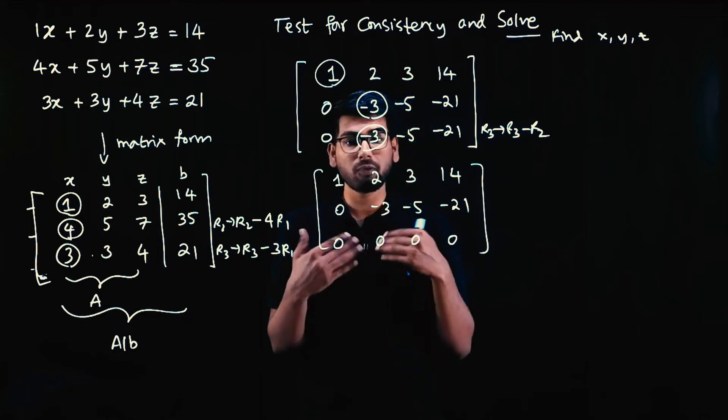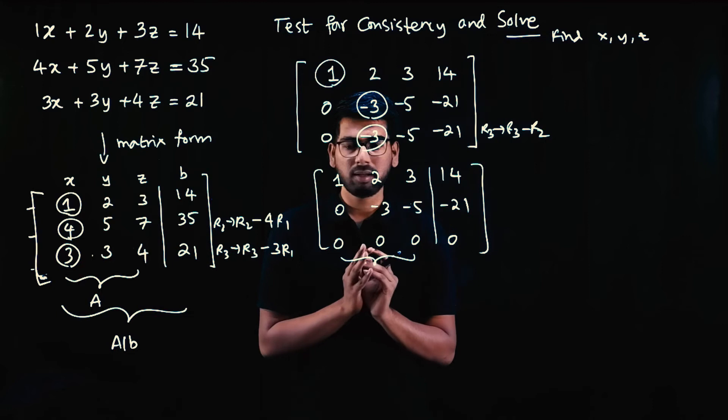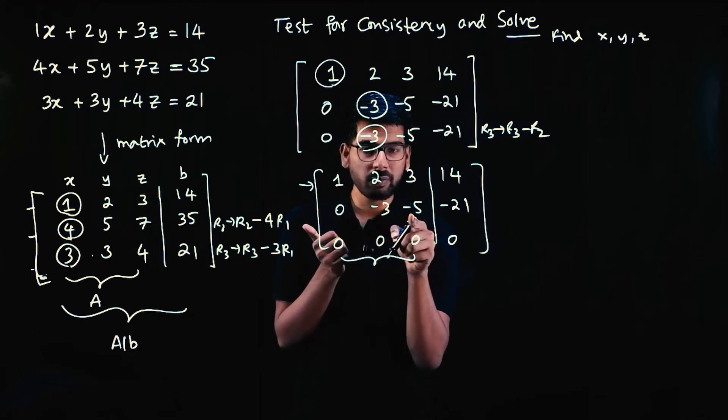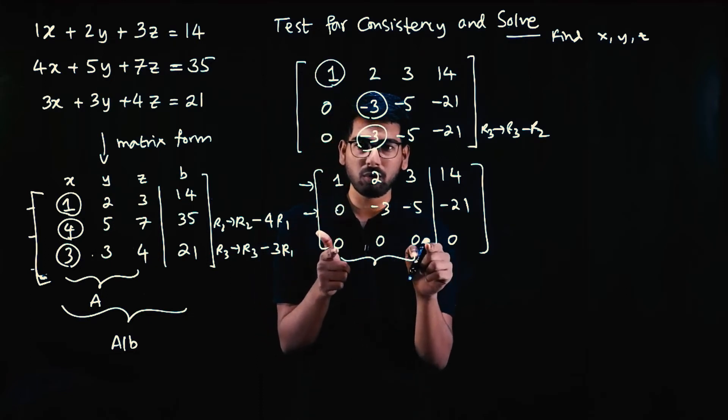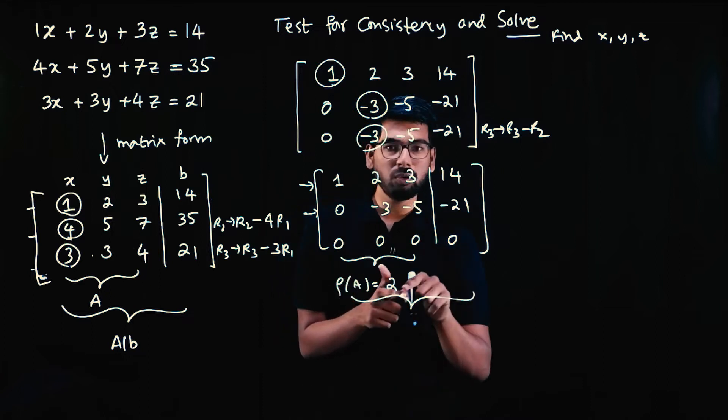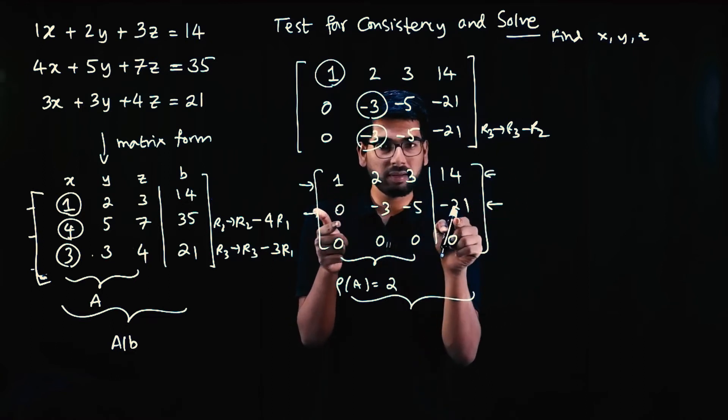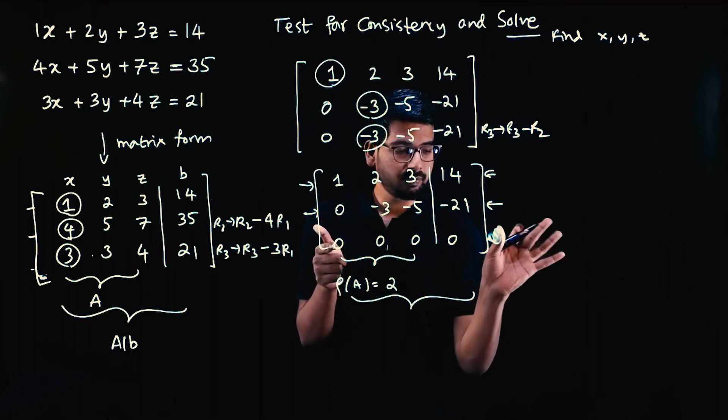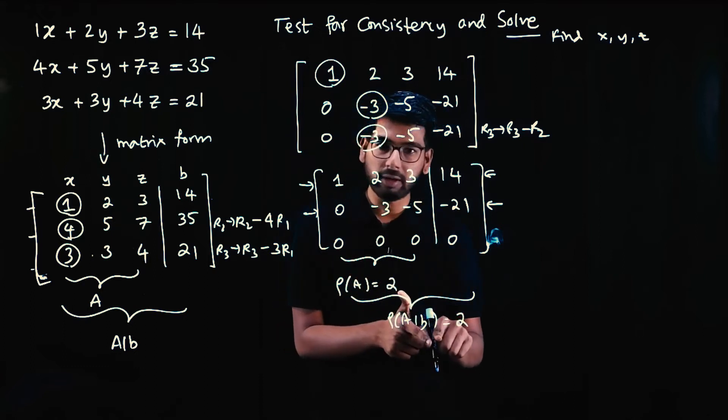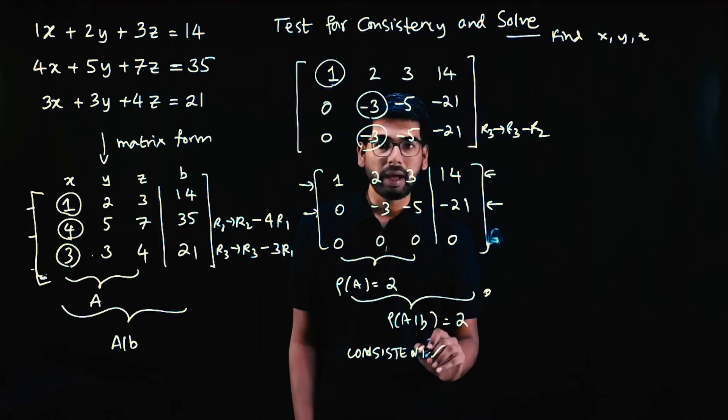Now check the rank: count non-zero rows. Draw a line. First three columns are A matrix. Two non-zero rows. Elements in a non-zero row are not all equal to 0. This row has minus 3 and minus 5 not equal to 0, so it's non-zero. This is a zero row, not counted. So rank of A is 2. Consider all four columns for AB matrix: still two non-zero rows. Rank of AB is also 2. Rank of A equals rank of AB, so the system is consistent.